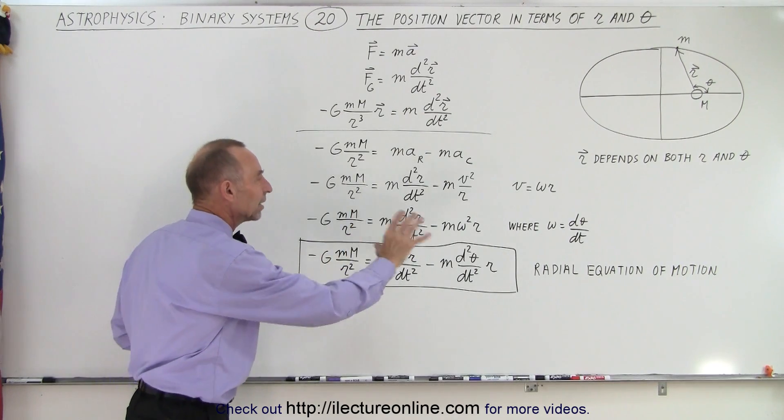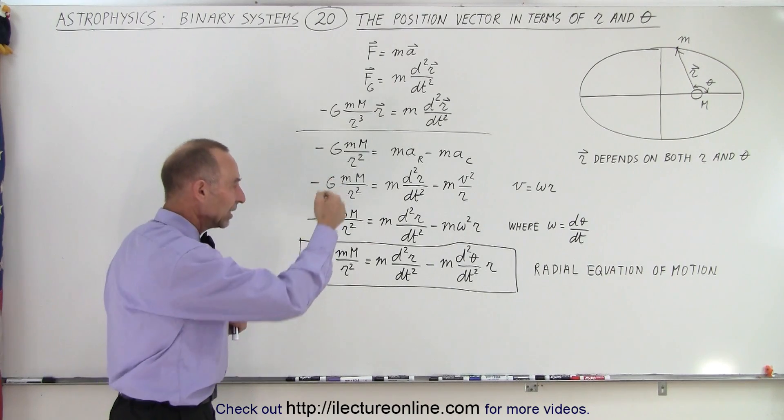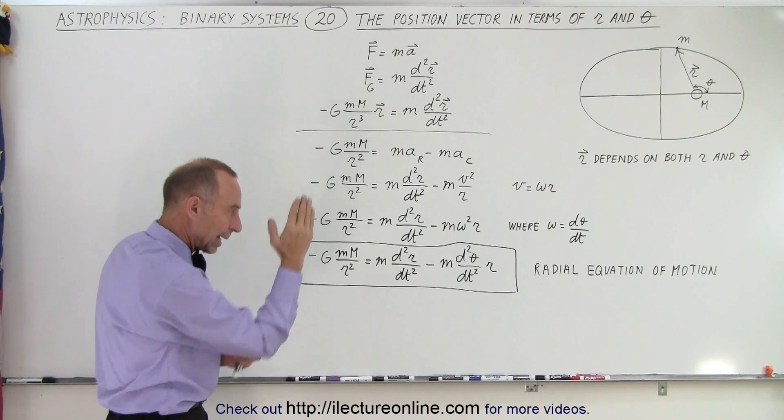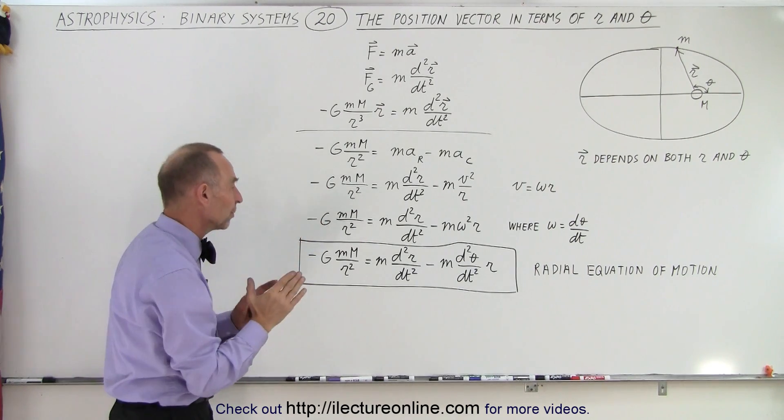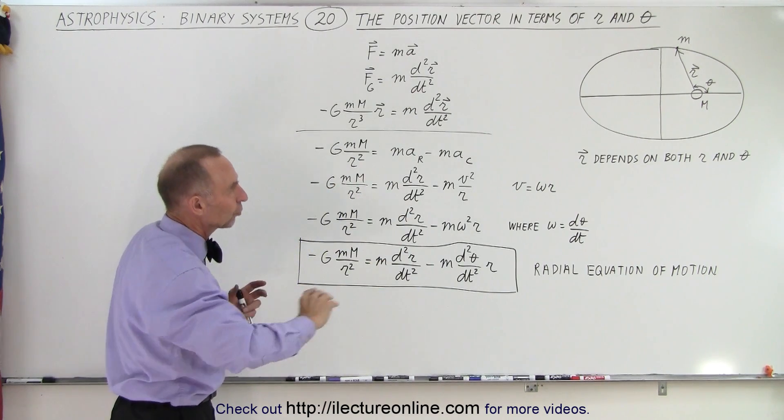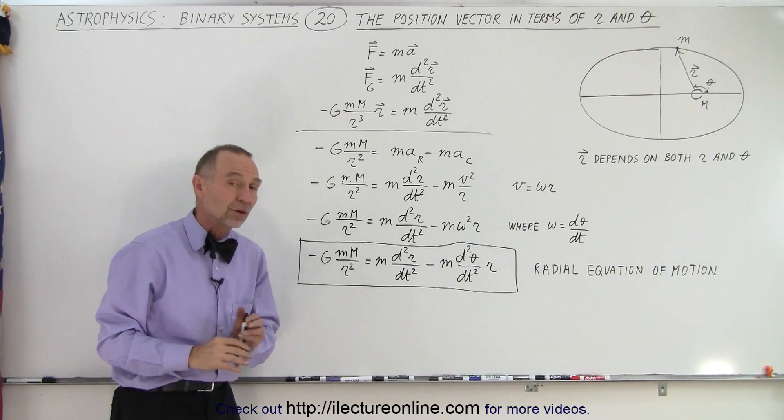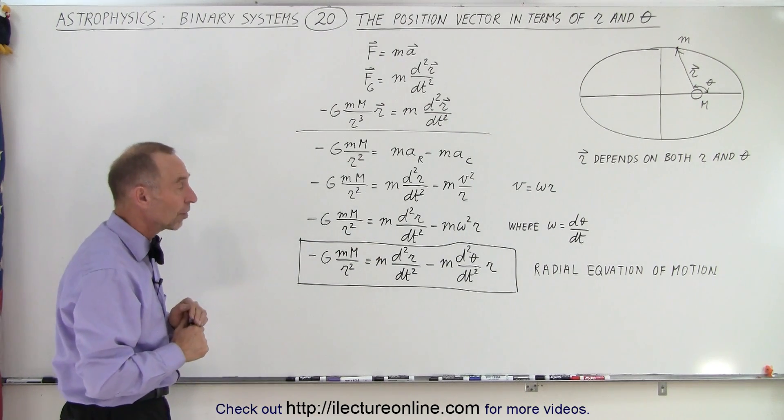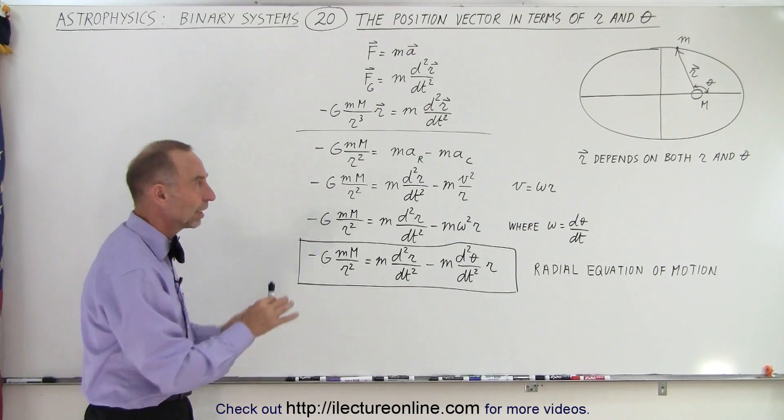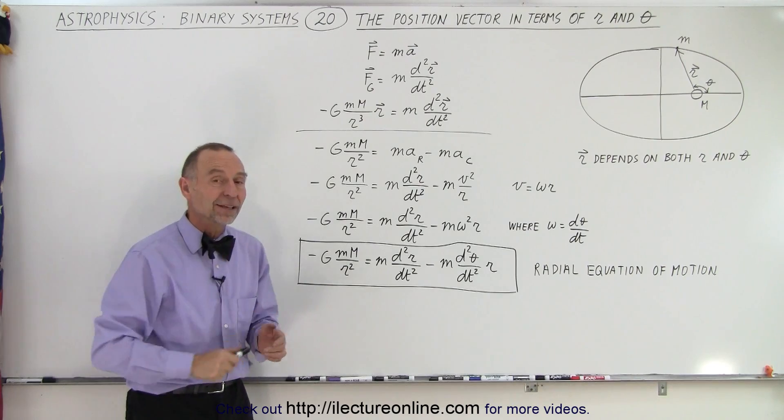And so this is what we call the radial equation of motion. That means there's going to be a change in acceleration on the line between the planet and the star, and there's going to be an acceleration around the orbit as it goes faster when it goes closer to the sun and slower as it goes farther away from the sun. We'll see how that works when we talk about Kepler's laws, but at least this gives us the concept of the radial equation of motion between a planet and a star, and that is how it's done.